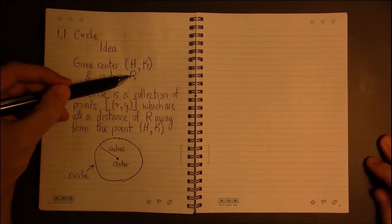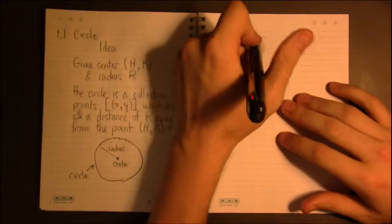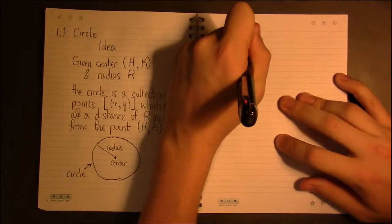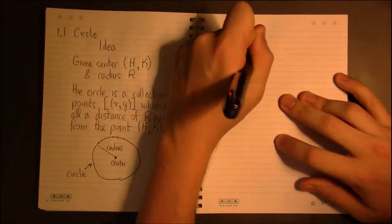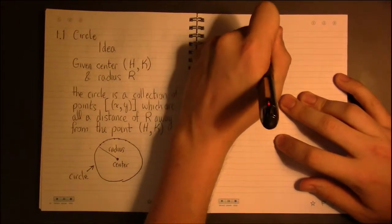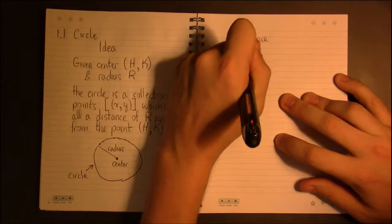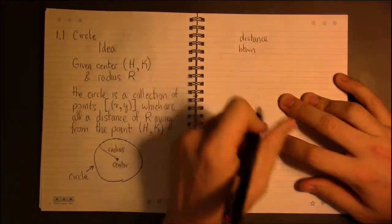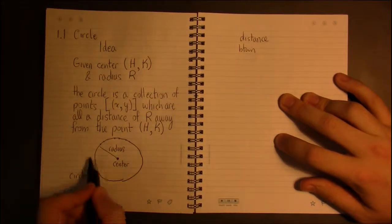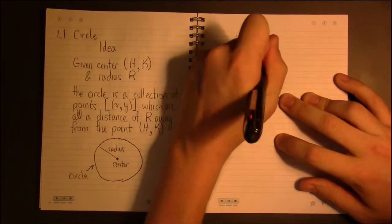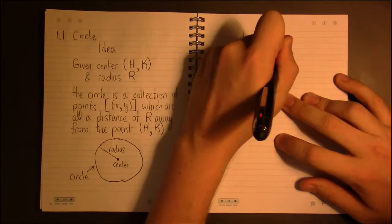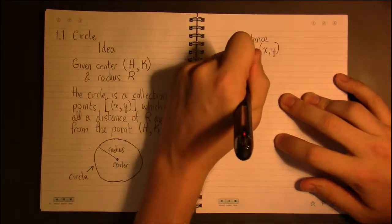equal to this. So if we write that out, the distance between any one of these points on the circle, which we'll just call an arbitrary X and Y, and the center H K, this is supposed to be R.